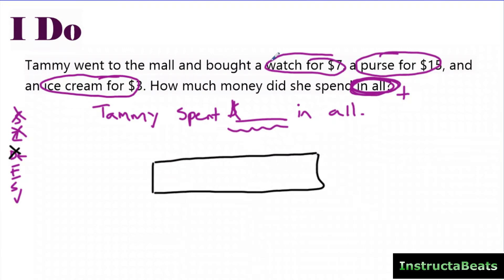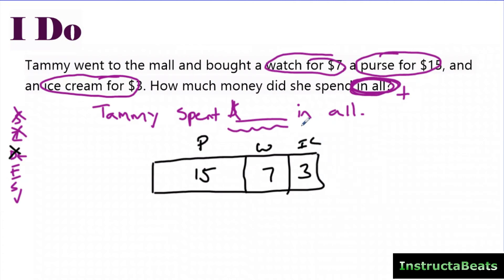For the develop step I draw my part-whole model. The purse was the biggest part at $15, so I draw the largest section and label it P for purse with 15. Then the watch at $7 and the ice cream at $3. I've labeled all three parts. My question mark goes at the bottom where the whole will be, because they gave me the three parts and I'm looking for the whole.